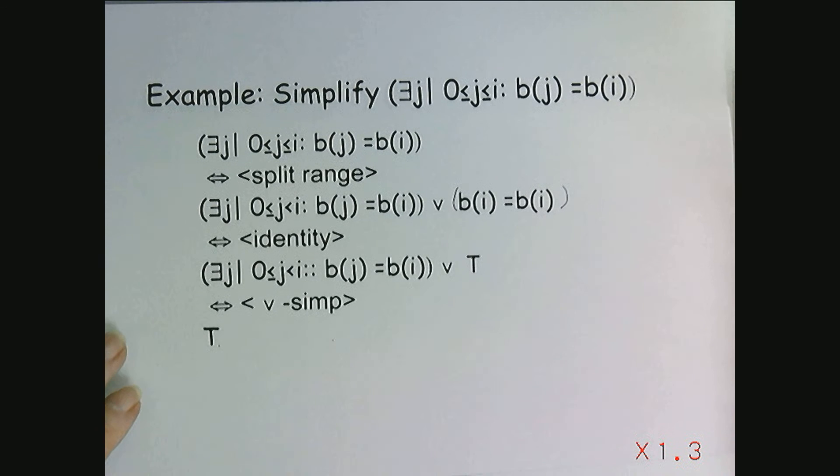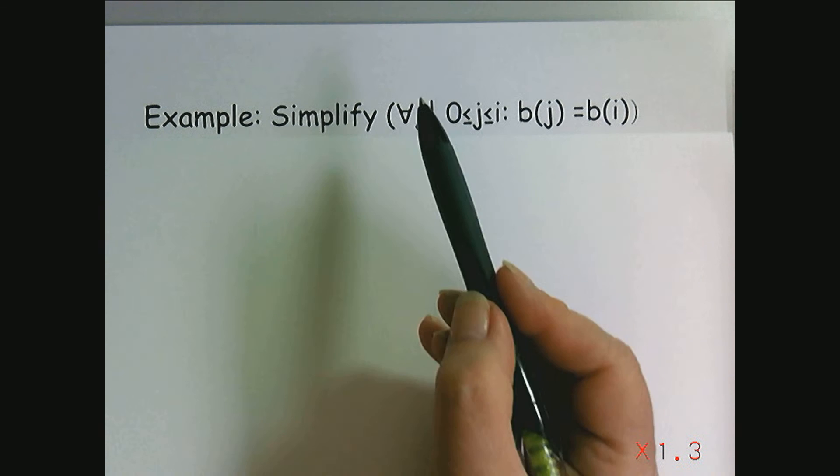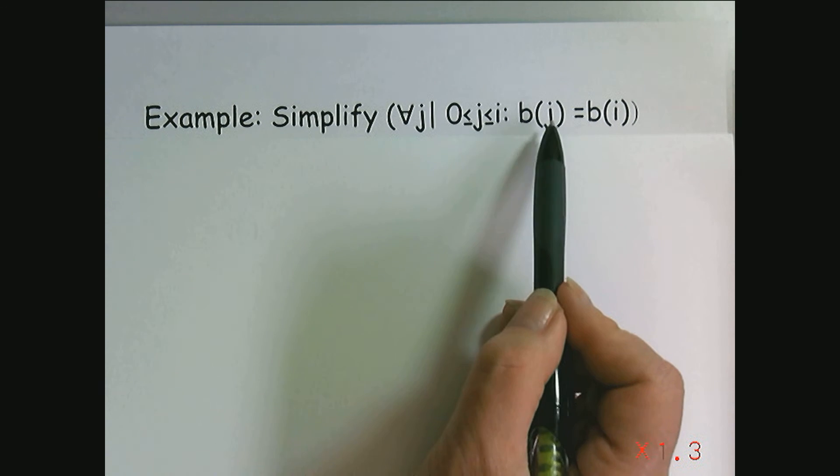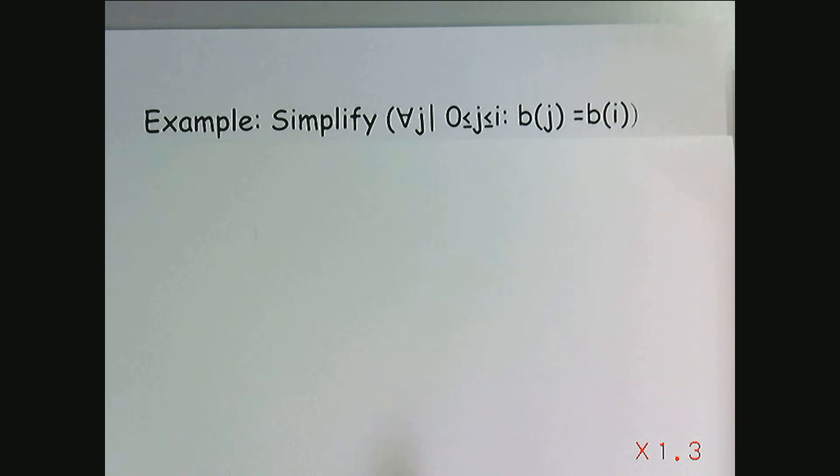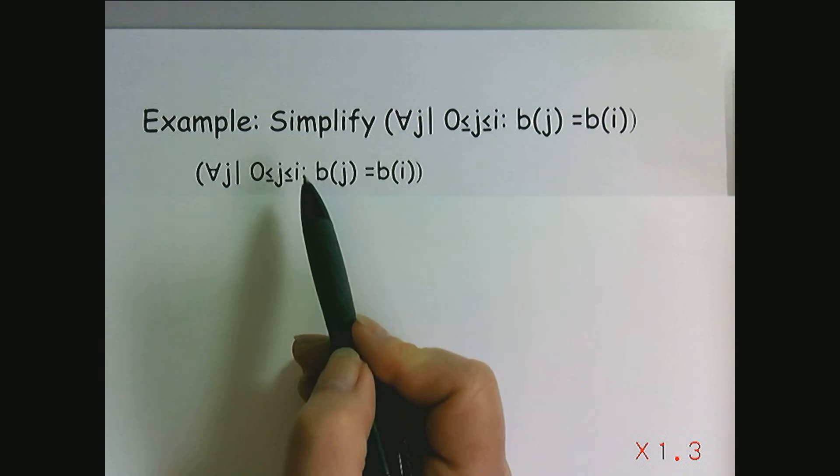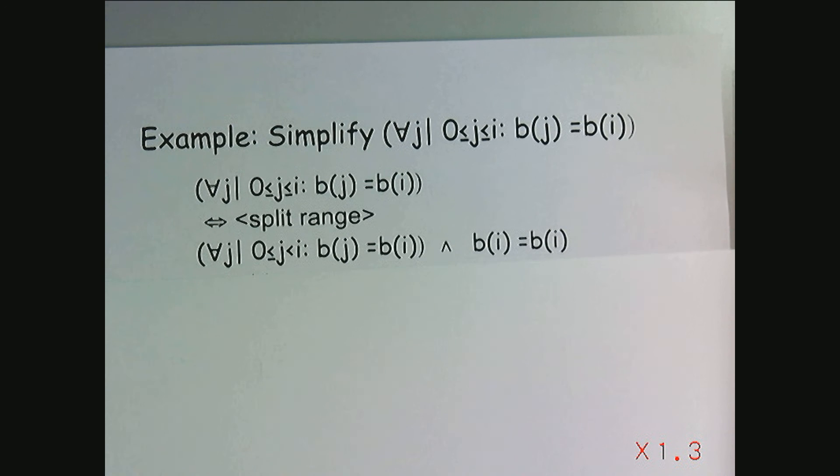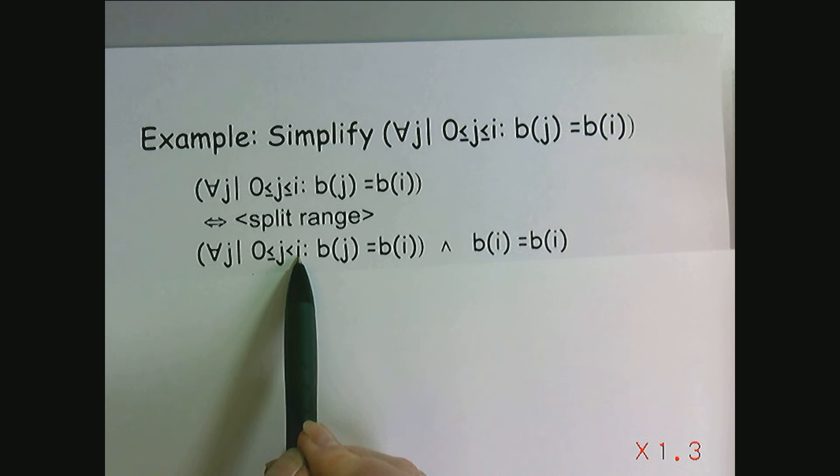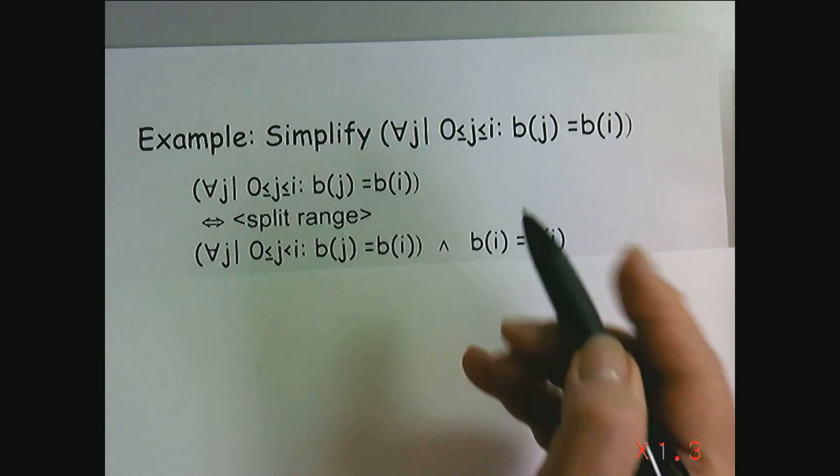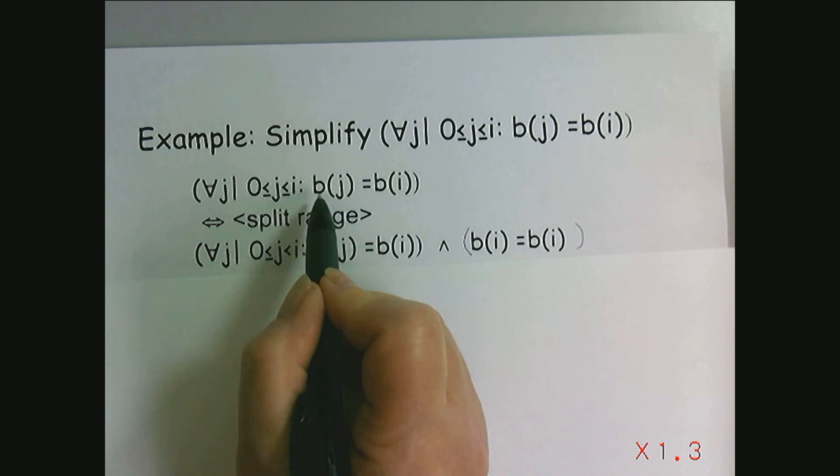What if, instead of there exists, I looked at a similar quantification with a for all? For all J between zero and I, the J-th entry matches BI, the value in the I-th entry. Well, let's think about that. Again, let's split off the last term when we split our range. So we would have for all J between zero and I, this time not including I, BJ is equal to BI. And then the operation corresponding to for all is and. And then when J is equal to I, the piece we split off was BI equal to BI.